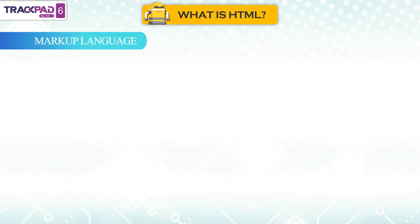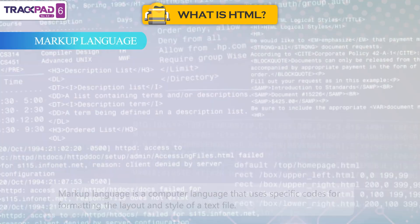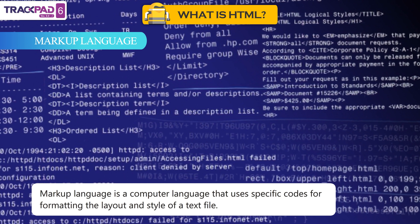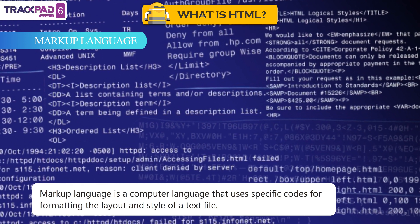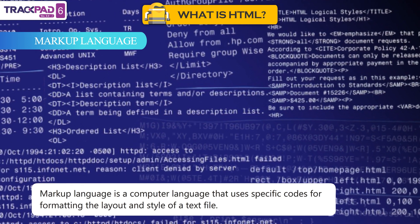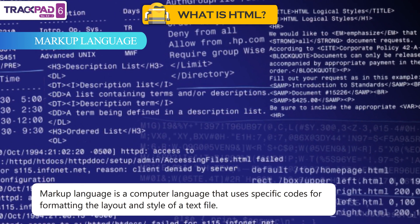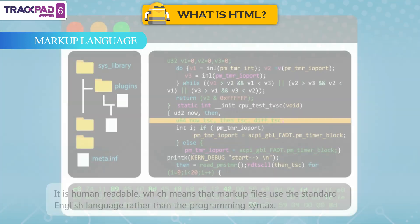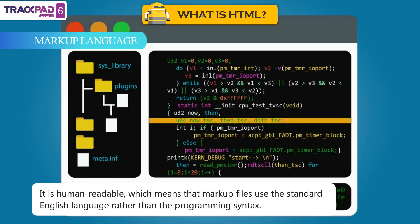Markup language. Markup language is a computer language that uses specific codes for formatting the layout and style of a text file. It is human readable, which means that markup files use the standard English language rather than the programming syntax.